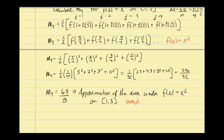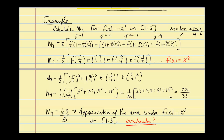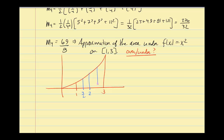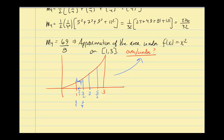With f(x) = x², this becomes (1/2) · [(5/4)² + (7/4)² + (9/4)² + (11/4)²] = (1/2) · (1/16) · [25 + 49 + 81 + 121] = (1/32) · 276 = 276/32 = 69/8. This is our midpoint approximation. It's unclear from the picture alone whether M4 is an over or underestimate, since some rectangles overestimate and some underestimate.